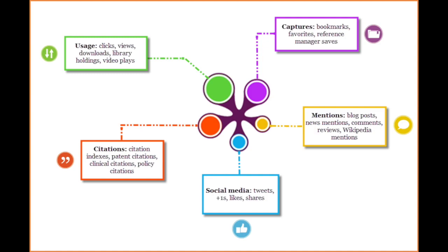There are five categories making analyzing research impact visually easy to understand. Known as the PlumPrint, the five categories are usage, captures, mentions, social media and citations.